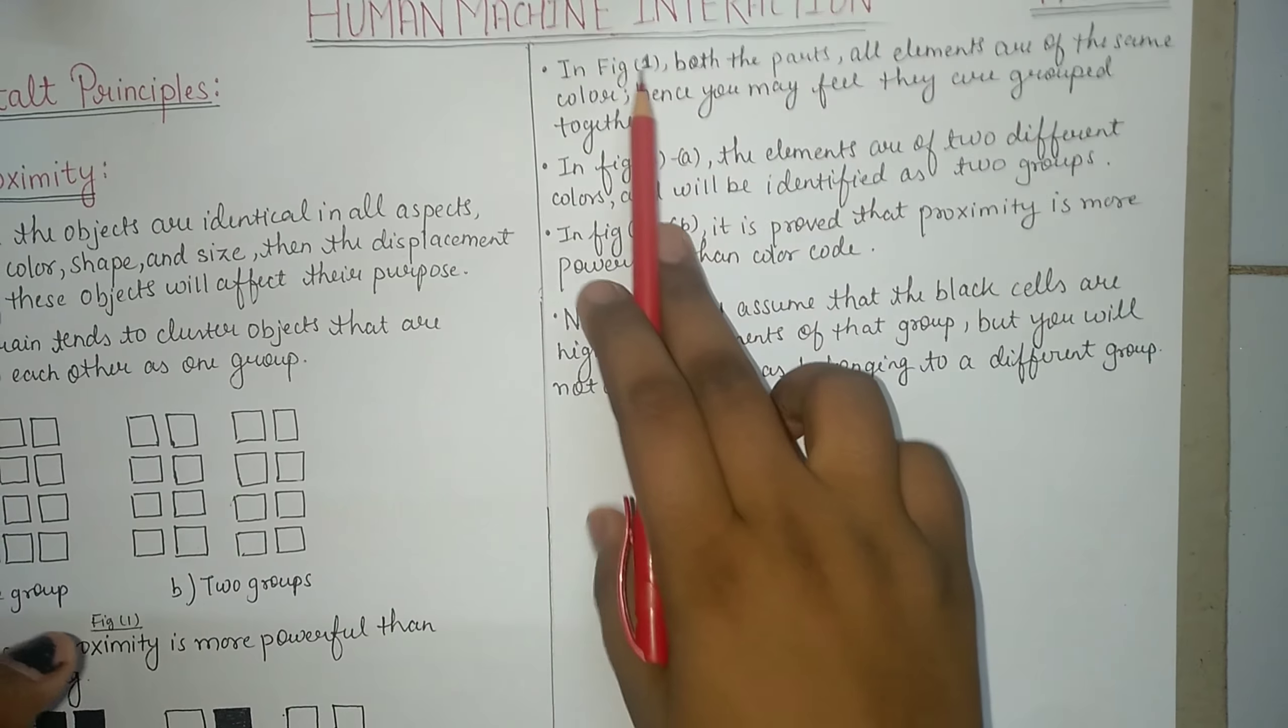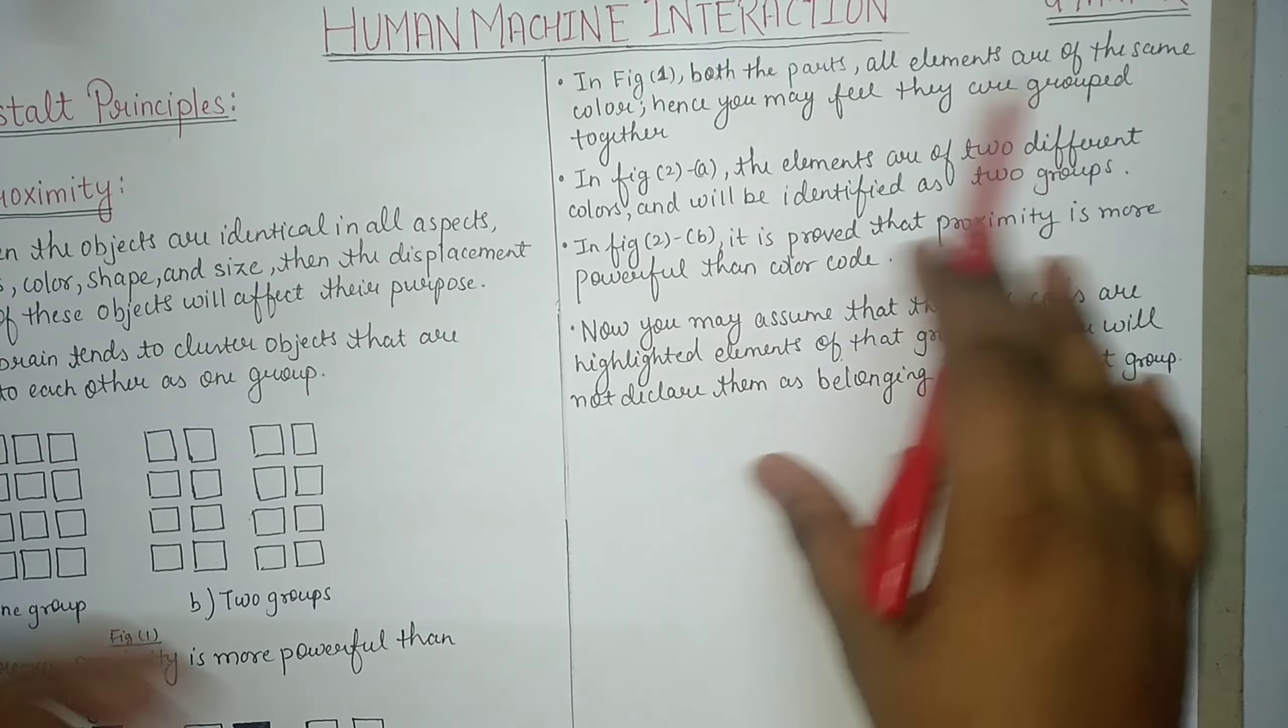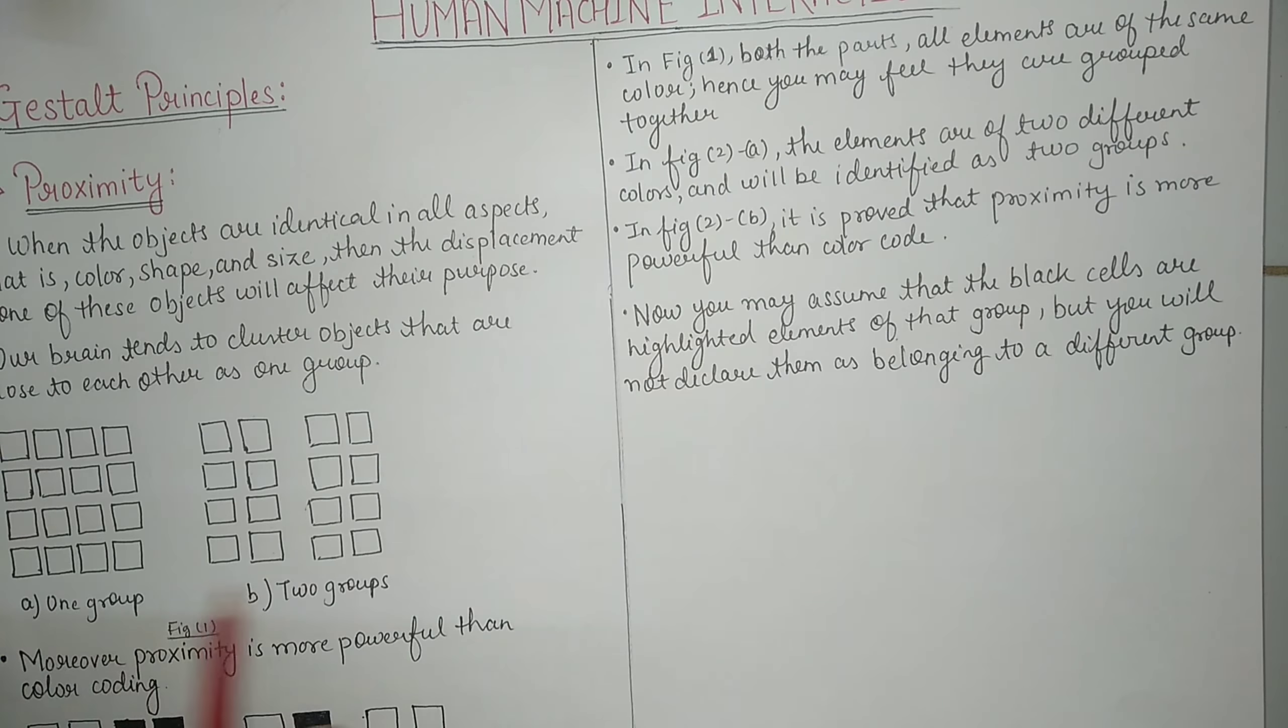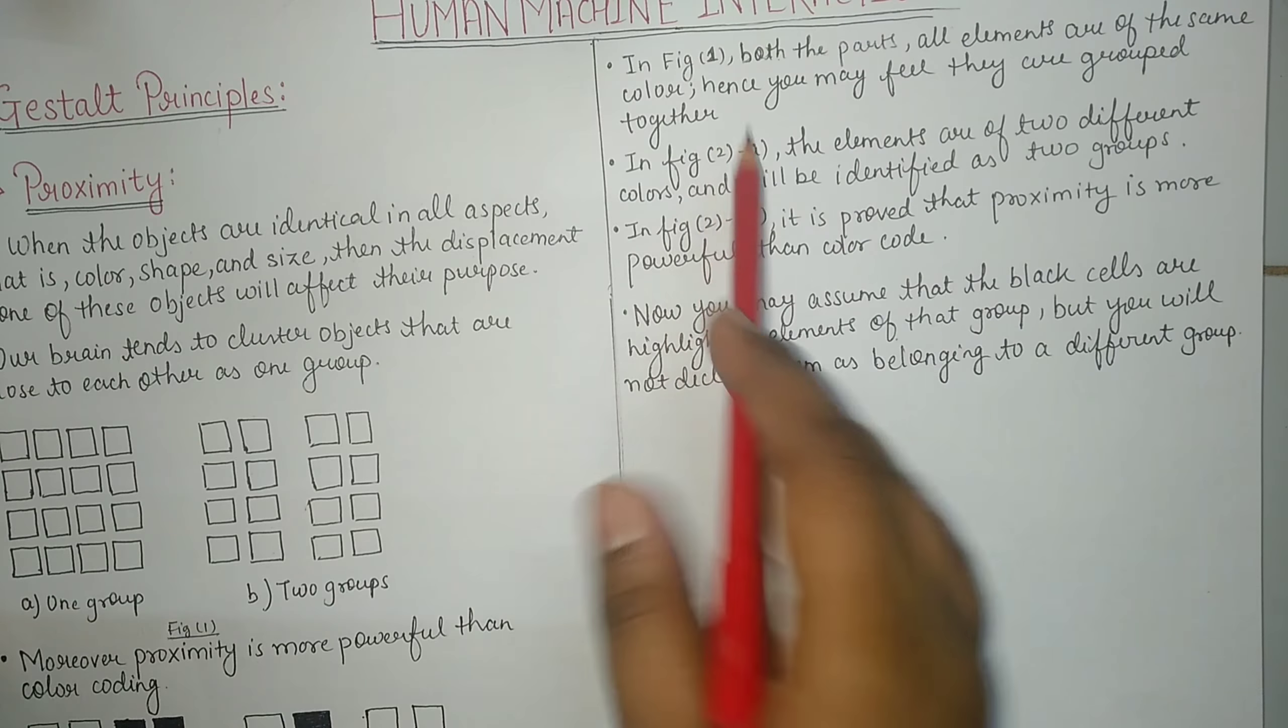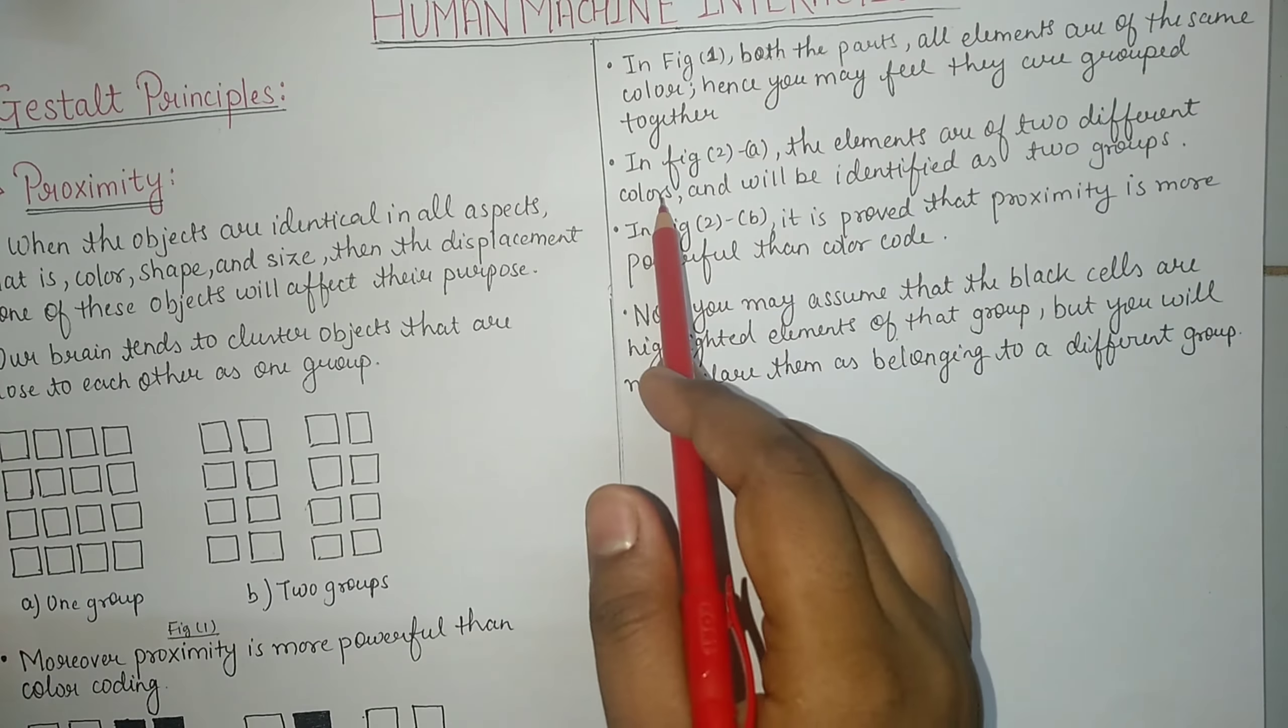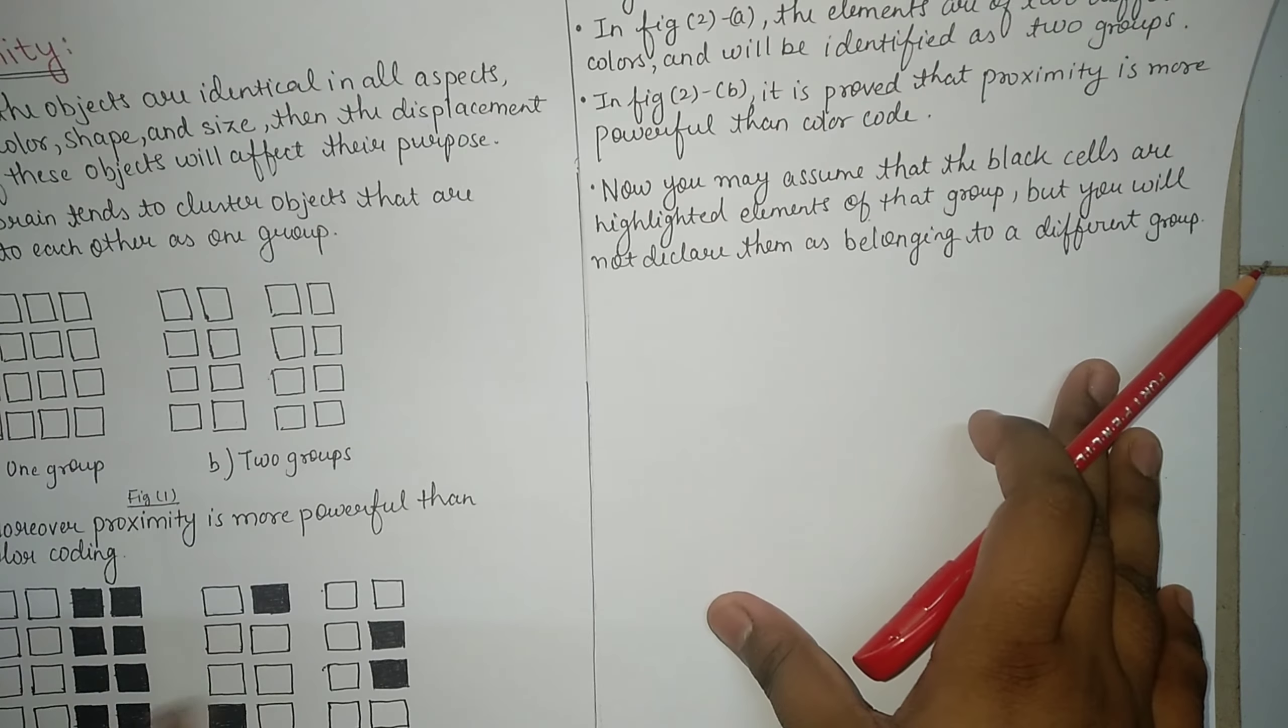Yeah, that's how human brain or human eye perceives a particular object. Now an explanation is given here. In figure 1, both the parts, all elements are of the same color. See here in figure 1, in two parts elements are of the same color. Hence you may feel they are grouped together.